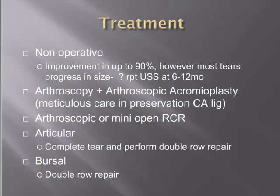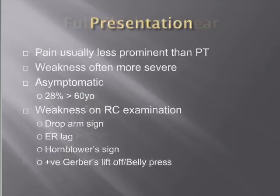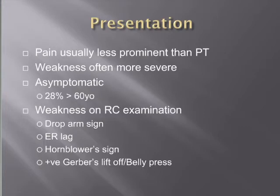Full thickness tears, at the more severe end of the spectrum, can be classified as acute versus chronic, based on size — small, medium, large, and massive — and on the number of tendons involved. In presentation, pain is usually less prominent than in partial thickness tears, but weakness is often more severe. A significant proportion of patients can be asymptomatic, especially if low-demand and elderly. 28% of patients over 60 will have a full thickness tear on MRI while being completely asymptomatic. Examination signs supporting a full thickness tear include the drop-arm sign for supraspinatus, external rotation lag for infraspinatus, hornblower's sign for teres minor, and the Gerber lift-off or belly press test for subscapularis incompetence.